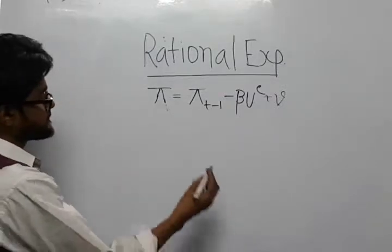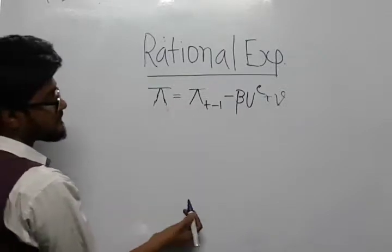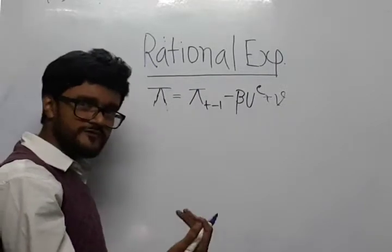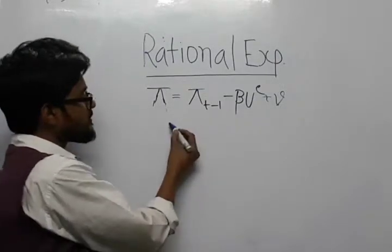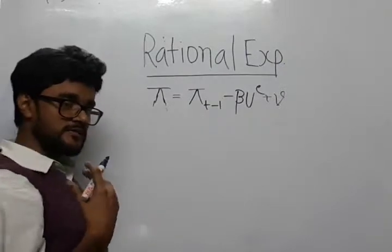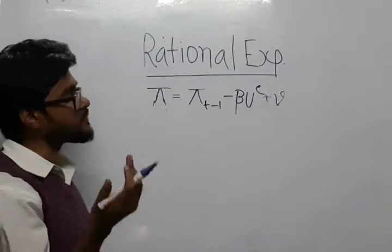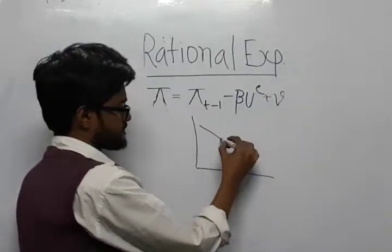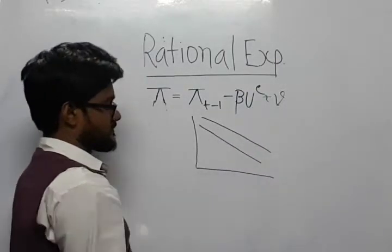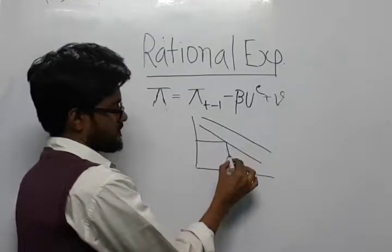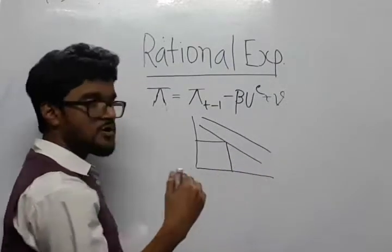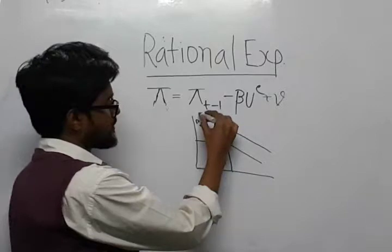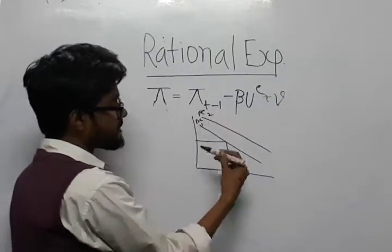Now, as you can see, here there is very little scope for government to intervene. Suppose the government makes a policy resolution that they want to increase the money supply in the economy. As a result, the Phillips curve moves to a higher Phillips curve.